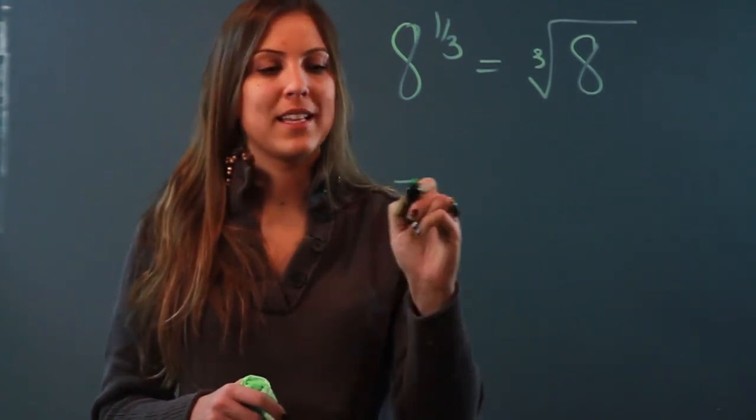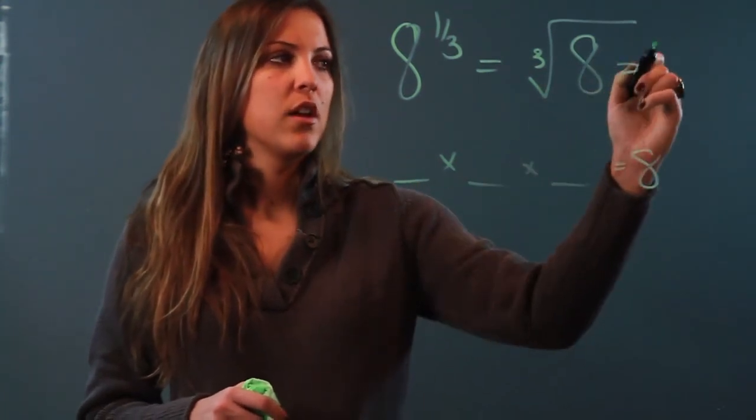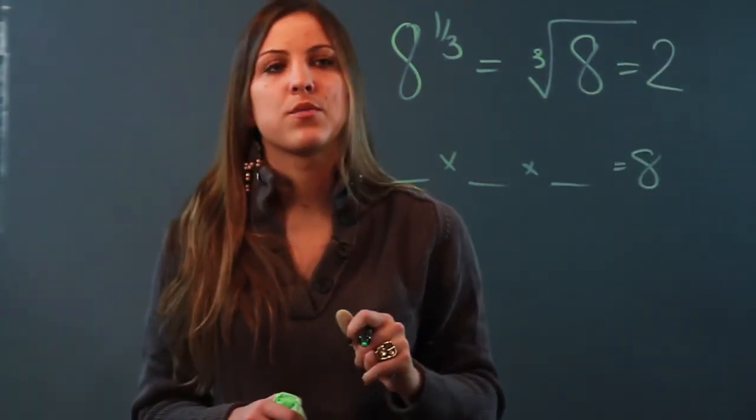So I'm thinking of a number that I multiply by itself three times to get 8, and that number is 2. So 8 to the one-third power is equal to 2.